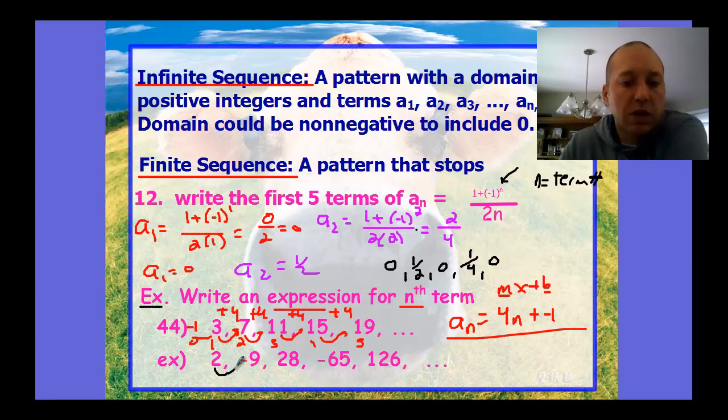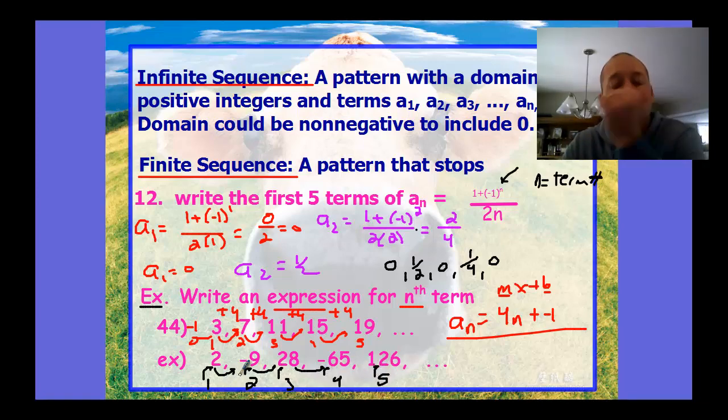A more complicated one would be this one, because it's going positive, negative, positive, negative. And it's much harder to see because it's not a constant rate of increase. To help with that, I'll look at the term numbers: term 1 to 2, term 2 to 9, term 3 to 28, term 4 to 65. I'm trying to figure out how these are related. Instead of going from the previous term to the next term, we're actually going from the term number to the term value.